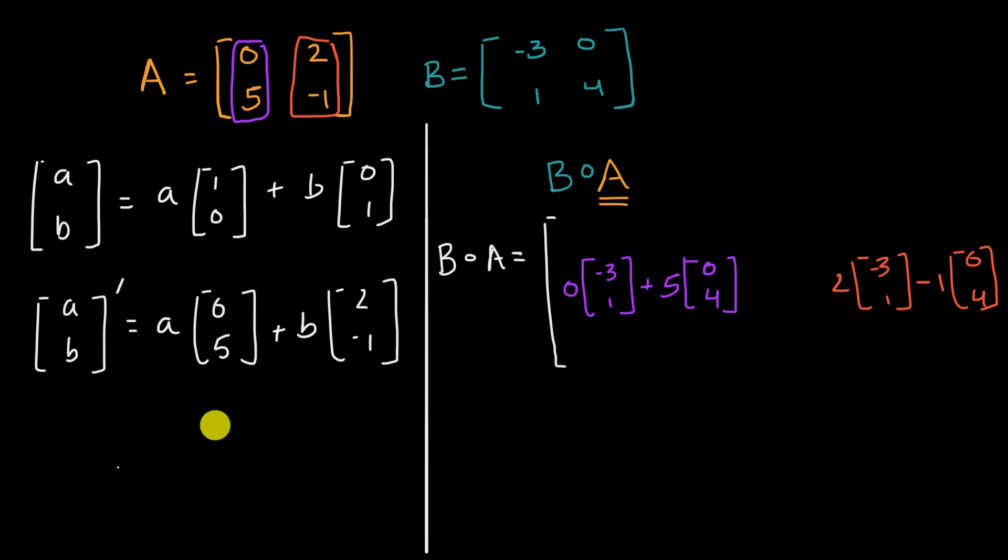And this doesn't look like a matrix just yet, but if you work through it, it will become a matrix. For example, if I multiply, well, zero times all of this is going to be zero. And then five times zero is going to be, let me just write it this way. This would turn into five times zero is zero, five times four is 20. And then this matrix right over here is going to be two times negative three one is going to be negative six two. And then we have minus zero four.